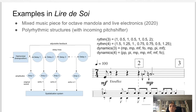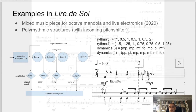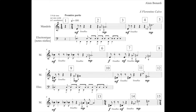The mixed music piece 'Lire de Soie' was composed in 2020 for Octave Mandela and live electronics. It features multiple rhythmic structures that generalize the previous structure shown, with also an incoming pitch shifter. The first note — the E played by the Octave Mandela — is repeated using two rhythmic structures: structure number 3 above and structure number 4 under. Here is an excerpt with only the first note played at the Octave Mandela, and then the result at the beginning of the piece.